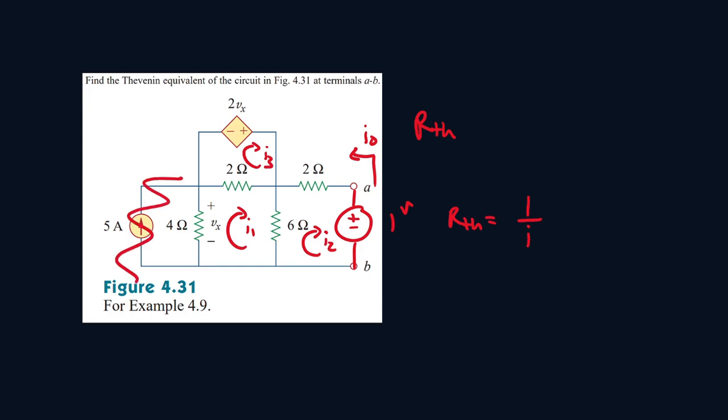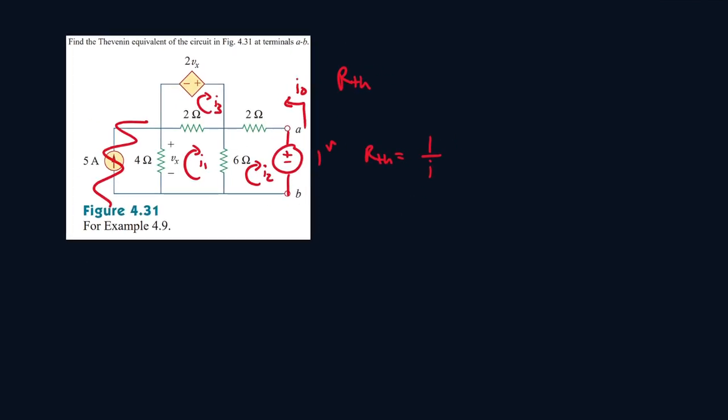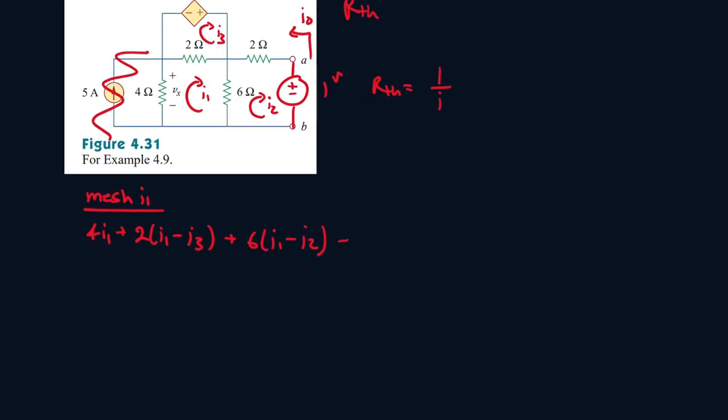And obviously we don't worry about this because this is not part of the circuit anymore as the current source makes an open wire. So let's write the equation for mesh I1. So it's 4I1 plus 2I1 minus I3 plus 6I1 minus I2. Now let's FOIL this out quickly. And let's collect like terms.